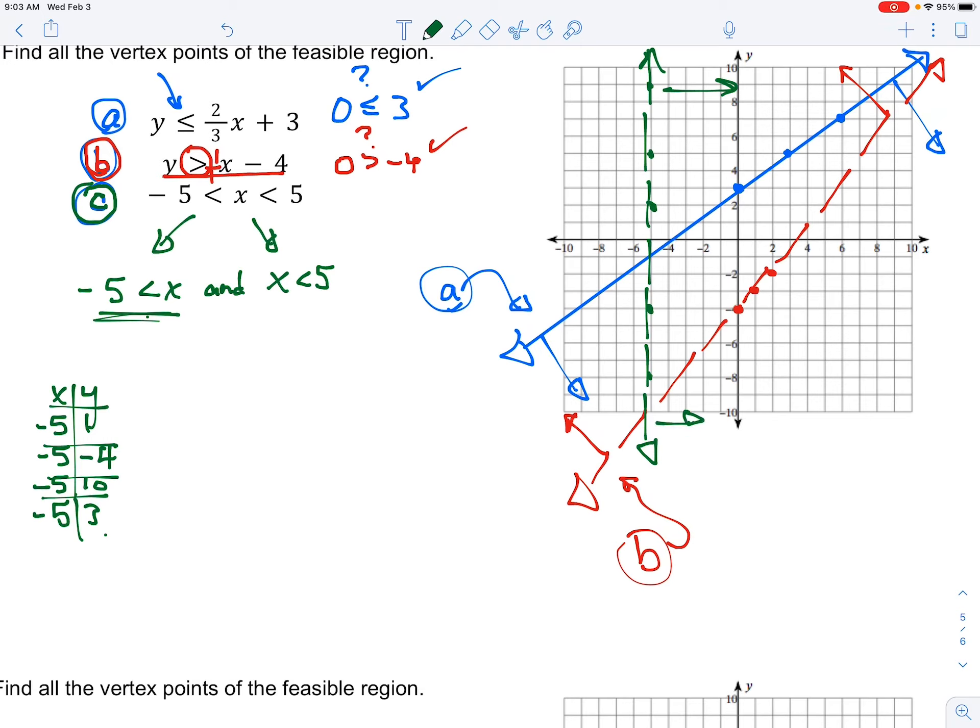Something similar with the inequality X is less than 5. That will have points that are at 5, 3, 5, 0, 5, negative 8. That is also a vertical line. And since the inequality is X is less than 5, they're going to be facing in this way, another little channel.